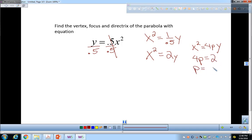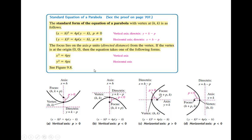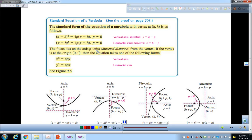That means p equals one-half. p tells you the focus lies on the axis p units — a directed distance — from the vertex. Directed distance means that if p is negative, you go to the left, or down if it's an up-down parabola.